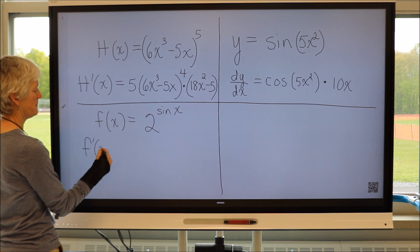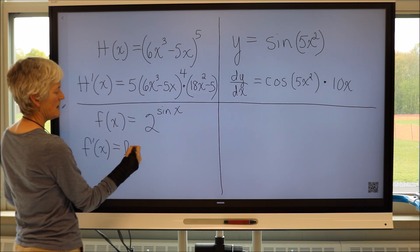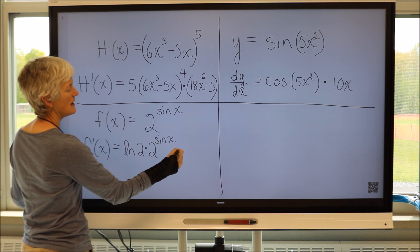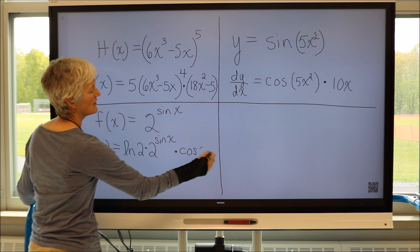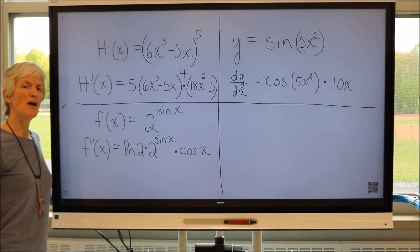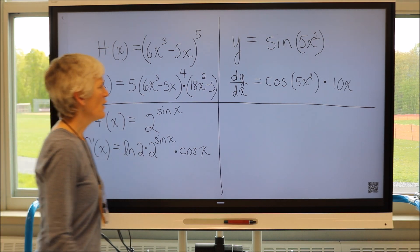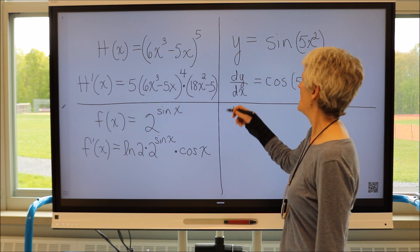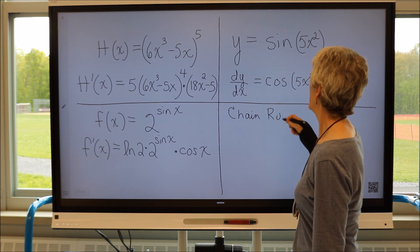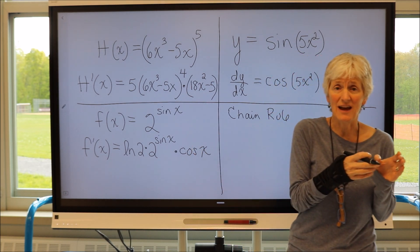Try to see if you can figure out what the chain rule is. So the derivative of 2 to the sine of x is the natural log of 2 times 2 to the sine of x times the cosine of x. Pause the video and see if you can figure out what I've been doing. You may have noticed that I'm kind of taking the derivative of the outside function and then multiplying it by the derivative of the inside function.